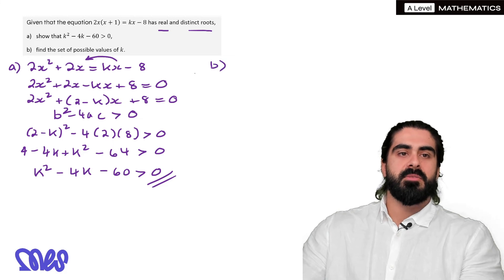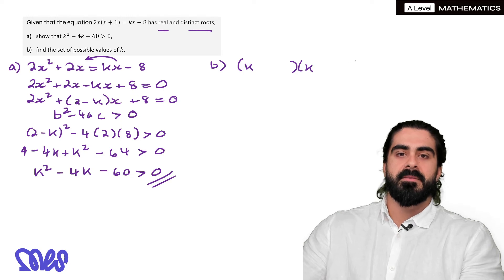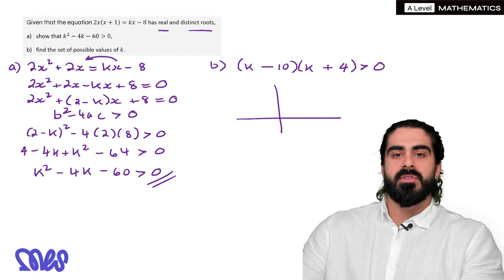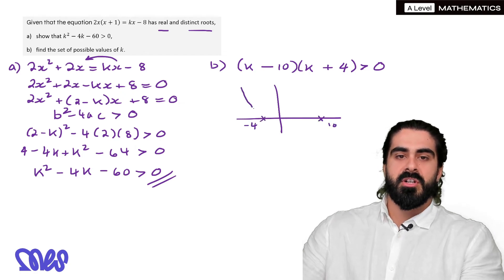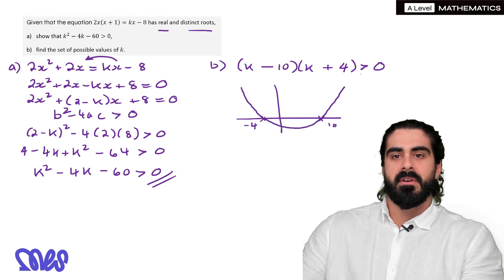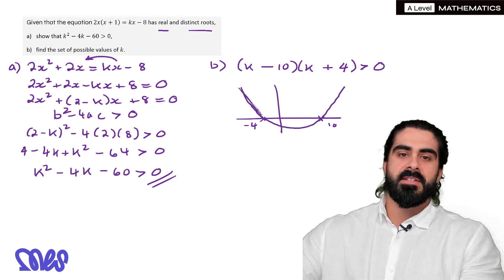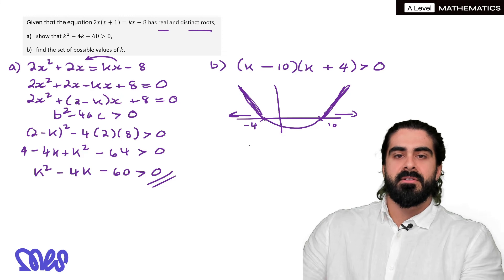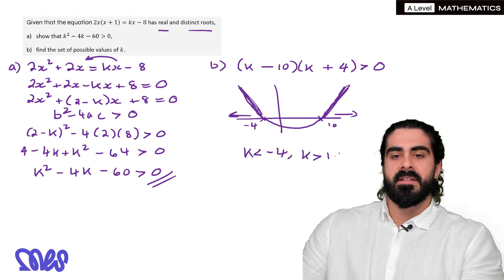Then for part b find the possible values of k, so this is just quadratic inequalities. We have k and k, for 60 we're going to use 10 and 6, to make minus 4 we mean minus 10 plus 6. So the roots to this equation are going to be 10 and minus 6. Just need a general sketch of that quadratic. When is it bigger than zero? So these are the end bits so we're just saying k is less than minus 6 and k is bigger than 10.